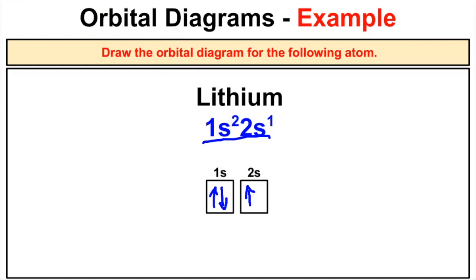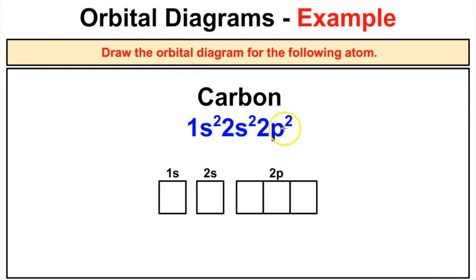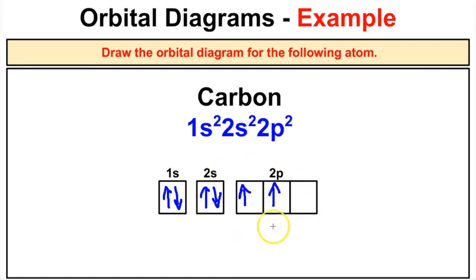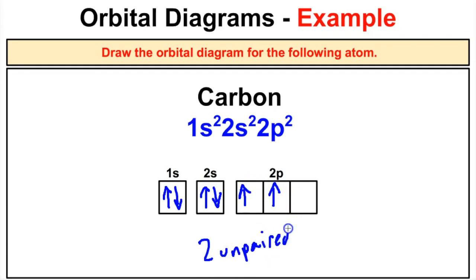For carbon, the configuration is 1s2 2s2 2p2. In the 1s orbital there are two electrons spinning in opposite directions, same in the 2s orbital. In the 2p orbital there are two electrons, and we must pay attention to Hund's Rule: fill each box with one electron first before placing a second. Carbon therefore has two unpaired electrons — the only way to determine that is by drawing the orbital diagram.